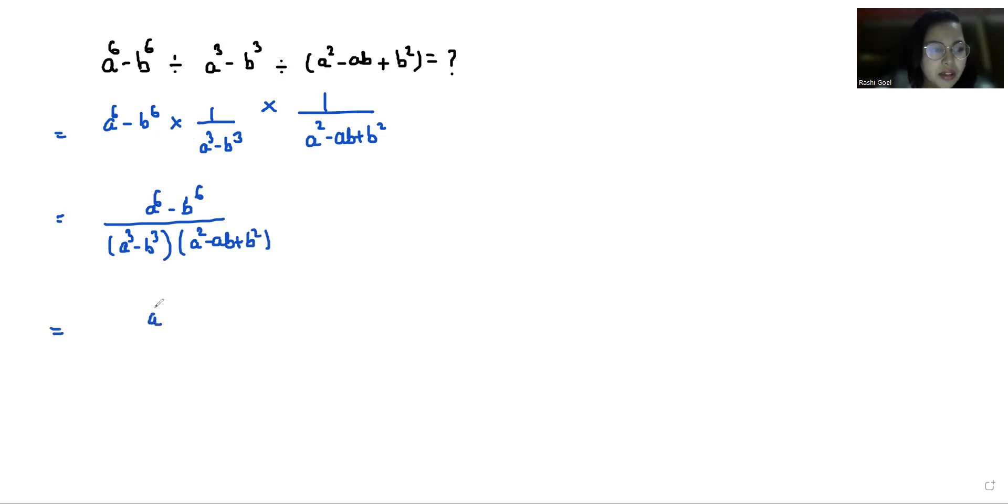Now a^6 I can write as (a^3)^2 - (b^3)^2 by a^3 - b^3 times a^2 - ab + b^2.